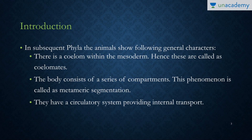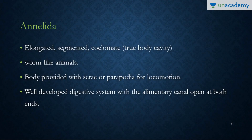There is a coelom within the mesoderm — these are called coelomates, the true coelom organisms. From Annelida onwards, all phyla have a true coelom. They have metameric segmentation, meaning the body consists of a series of compartments. They also have a circulatory system which provides internal transport.